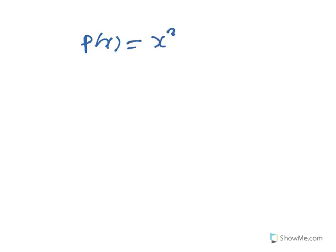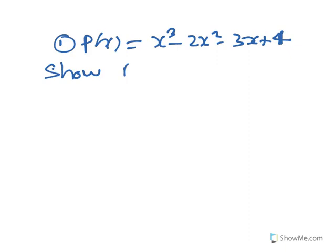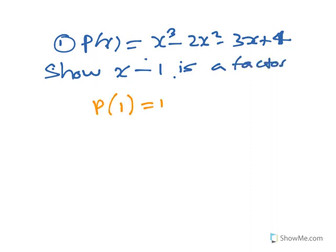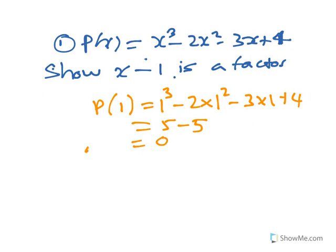As an example, let's say p(x) is x cubed minus 2x squared minus 3x plus 4. Let's show that x minus 1 is a factor. You just put x equals 1 into the polynomial: 1 cubed minus 2 times 1 squared minus 3 times 1 plus 4. You end up with 5 minus 5, which equals 0. So therefore x minus 1 is a factor.